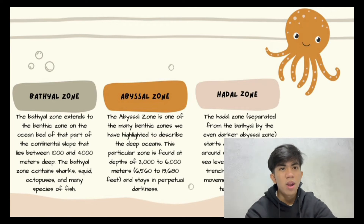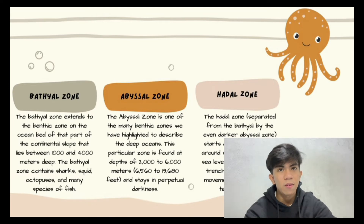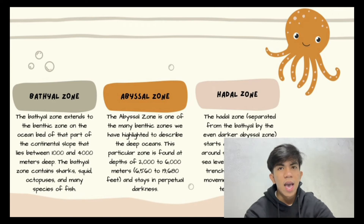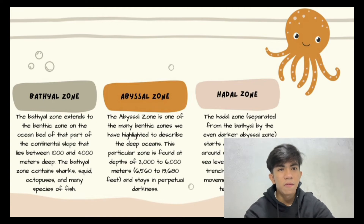The next one is the abyssal zone. The abyssal zone is one of the many benthic zones used to describe the deep oceans. This is the region of ocean floor plains. And lastly, the hadal zone — separated from the bathyal by the even darker abyssal zone — starts at the ocean floor. This is the region of deep trenches in the ocean.